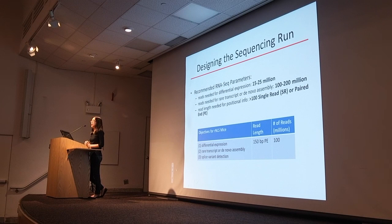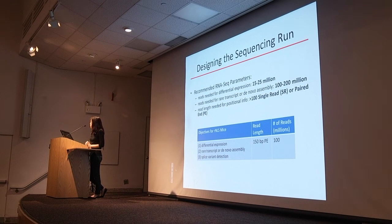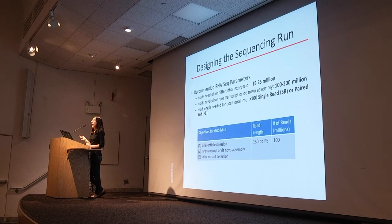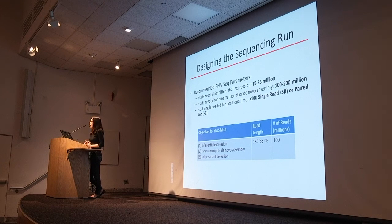In order to achieve our experimental goal, I customized our sequencing run with the sequencing core. Based on the recommended RNA parameters and the scientific objectives of our study, I've chosen a read length of 150-base paired-end runs. Paired-end runs mean that RNA fragments are sequenced from one end to the other, and then again sequenced from the other end back. The paired-end approach gives us additional positioning information in the genome, and the longer read length gives us more opportunity to capture splicing events.